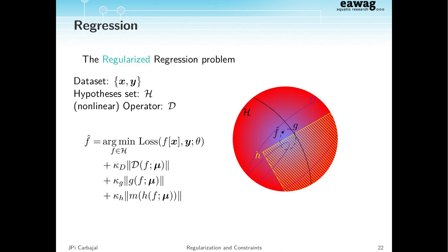These two problems — constrained and regularized — are very different. Regularized regression seems easier in general. But it doesn't provide a point solution anymore. For a given set of weights on the penalty terms, you may get many solutions that are equally equivalent, regions of solutions with the same performance.